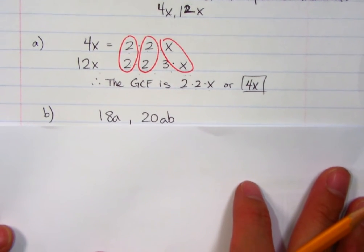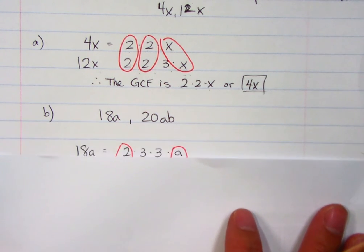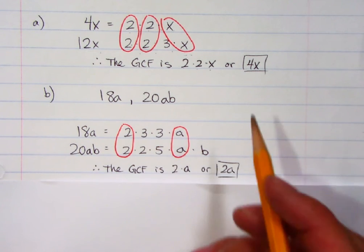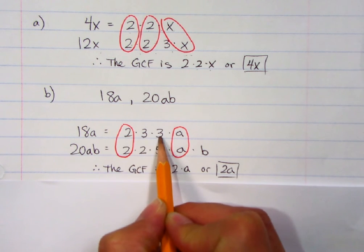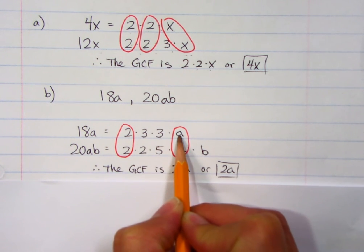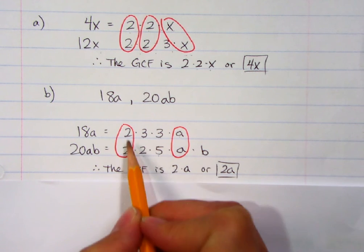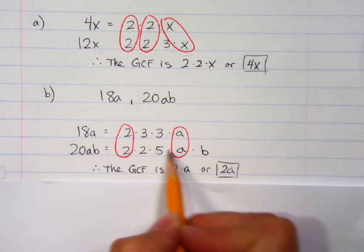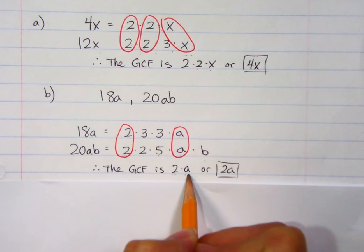Let's take a look at another one that I already did. 18a, 20ab. You can pause the video and see if you'd come up with it. All right, if you unpause the video now, you would see that this is what it would look like. The GCF should be 2a. Okay, 18 is made up of 2 times 3, that's 6. 6 times 3 is 18, and then the a. 20 is 2 times 2, 4 times 5 is 20. The only stuff they have in common are the 2s and a's. That's it. So 2 and then a is what they have in common. So 2a.